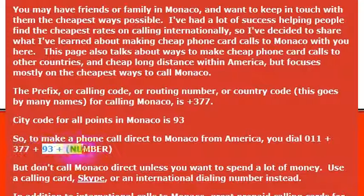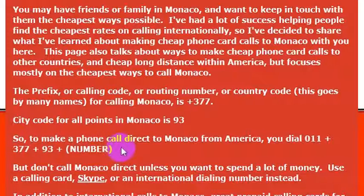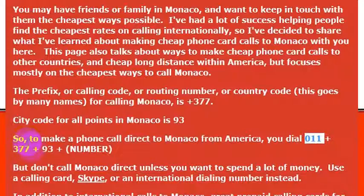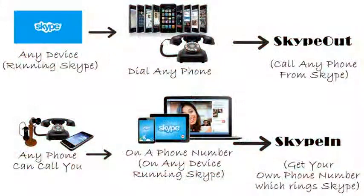Then you would dial 93, which is probably in the phone number you have if you're calling Monaco, and then the phone number that you want to dial. Again, to call from the United States, you would dial 011, then 377, which is the country code for Monaco.